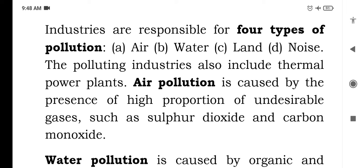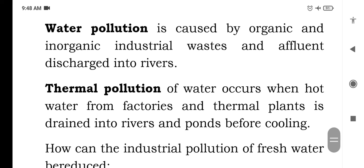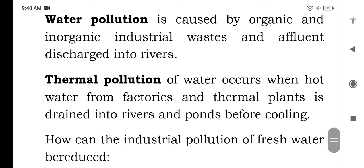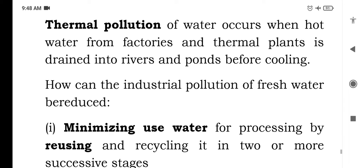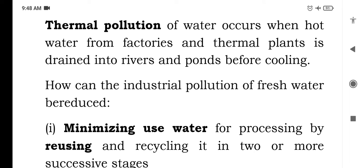The polluting industries also include thermal power plants. Air pollution is caused by the presence of a high proportion of undesirable gases such as sulfur dioxide and carbon monoxide. Water pollution is caused by organic and inorganic industrial waste and effluent discharge into rivers. Thermal pollution of water occurs when hot water from factories and thermal plants is drained into rivers and ponds before cooling.